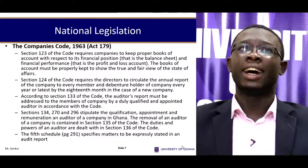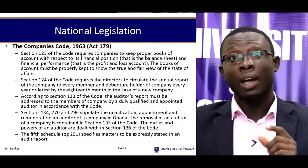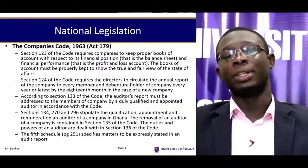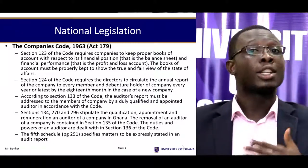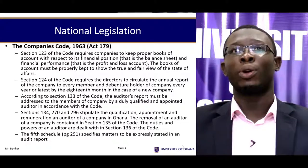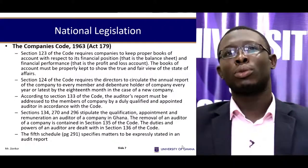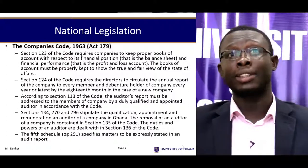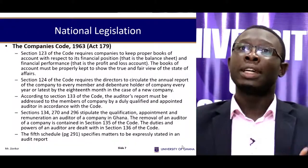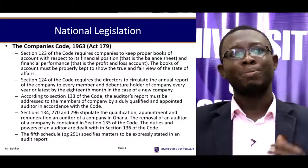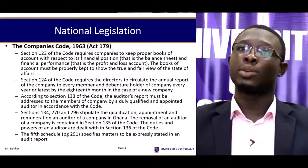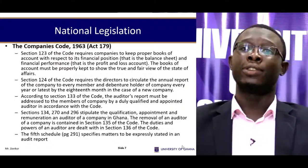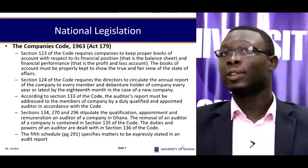Now let's look at the national legislation. In Ghana, the Companies Code, that is Act 179 of 1963, is the main legislation that regulates the activities of companies in Ghana. For example, Section 123 requires companies to keep proper books of accounts. Section 124 requires directors to circulate the annual report to every member and debenture holder every year, or latest by the 18th month for a new company. Section 133 states that the audit report must be addressed to members of the company. Sections 134, 270 and 296 stipulate the qualification, appointment and remuneration of an auditor. Clearly, the Companies Code is the main legislative instrument that governs the activities of auditors in Ghana.